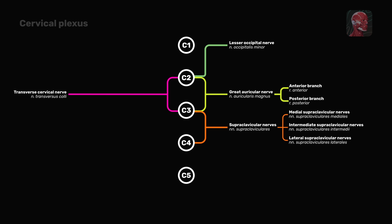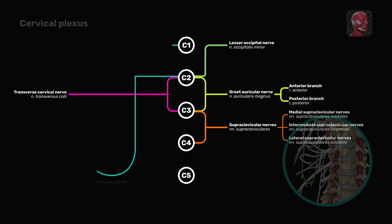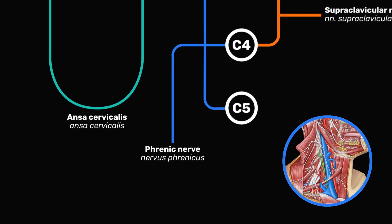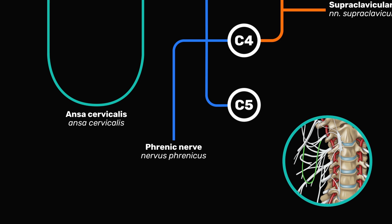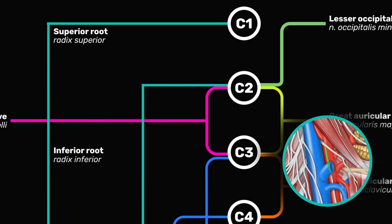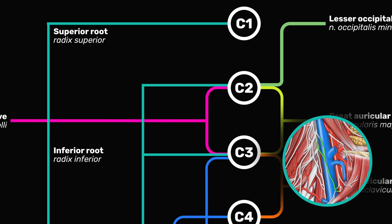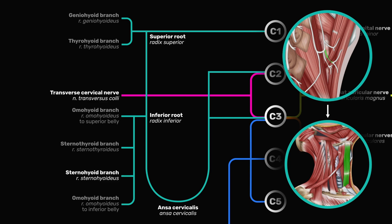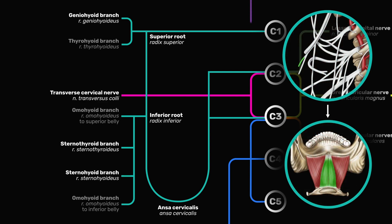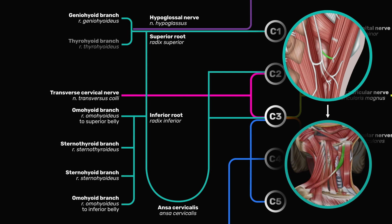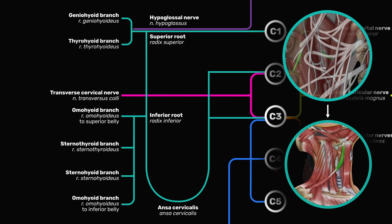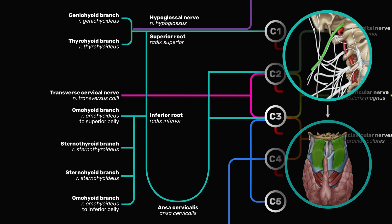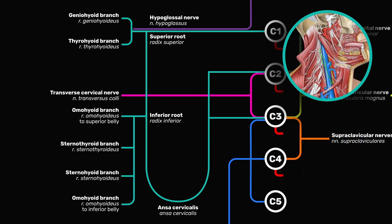Now let us discuss the motor or muscular branches of the cervical plexus. These are the so-called ansa cervicalis, the phrenic nerve, and several smaller muscular branches. The ansa cervicalis is a loop formed by two roots, the superior and inferior, which is composed of fibers from nerves C1 to C3. It gives rise to several branches: the sternohyoid branch (C1 to C3), the sternothyroid branch (C1 to C3), the geniohyoid branch (C1, passes with the hypoglossal nerve), the omohyoid branch (C1 to C3), and the thyrohyoid branch (C1, passes with the hypoglossal nerve). The branches of the ansa cervicalis provide innervation to these infrahyoid muscles.